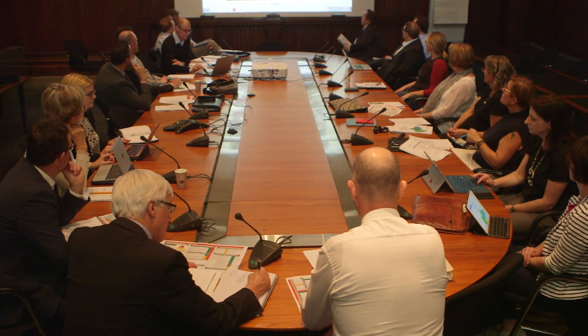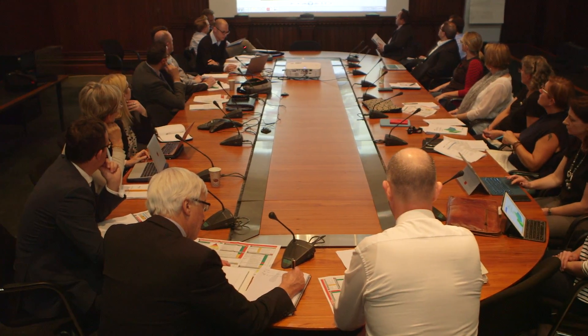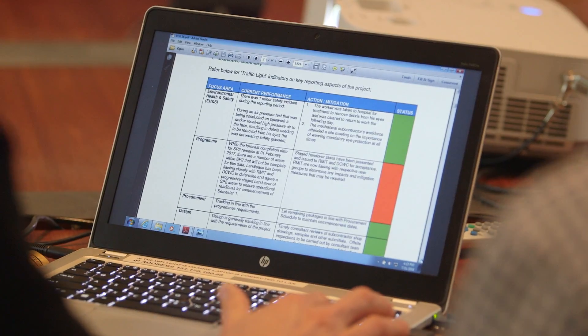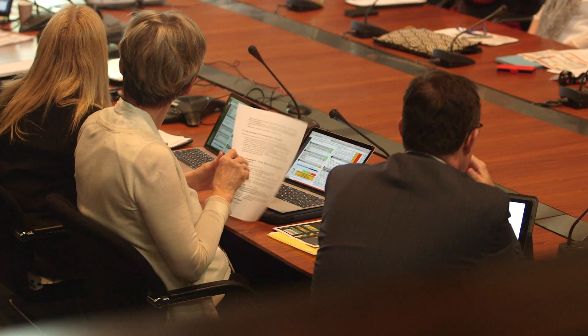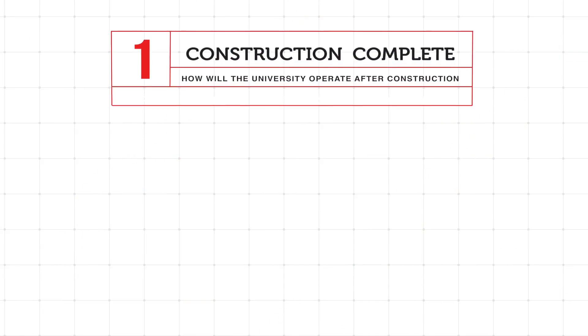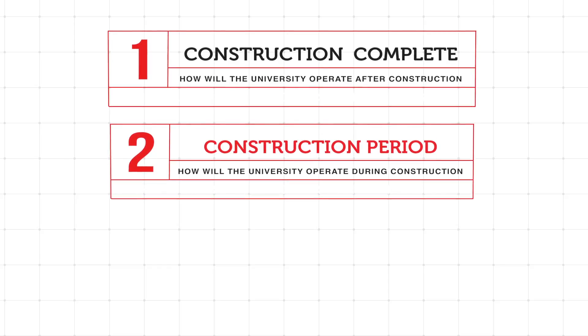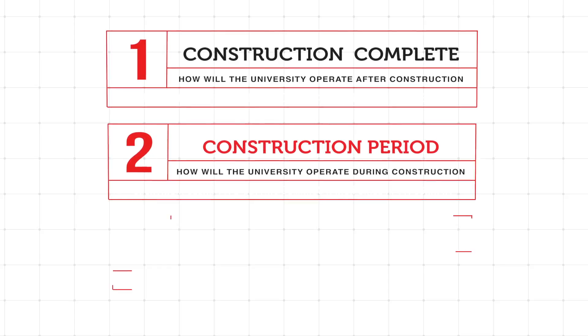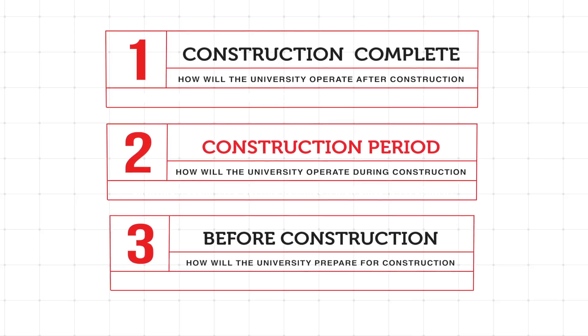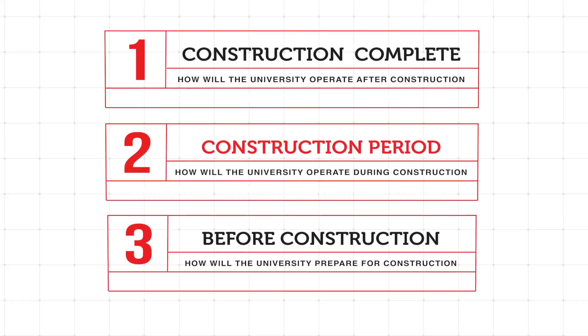The Operational Impact Strategy document, very early on, called out key risks and issues that stakeholders identified. It sets out how the university will operate after the construction is complete, how the university will operate during the construction, and what it needs to do in preparation for the construction.